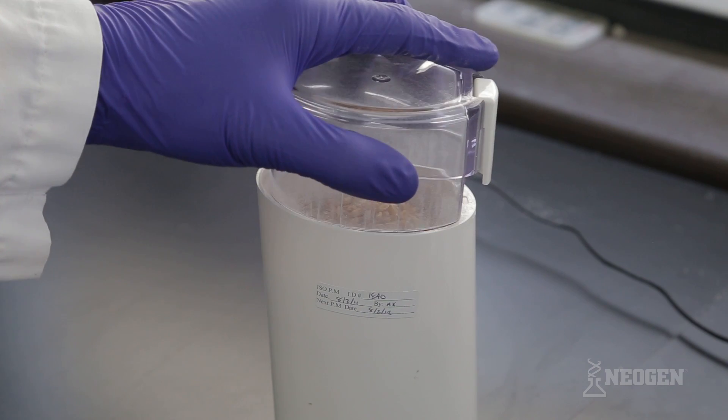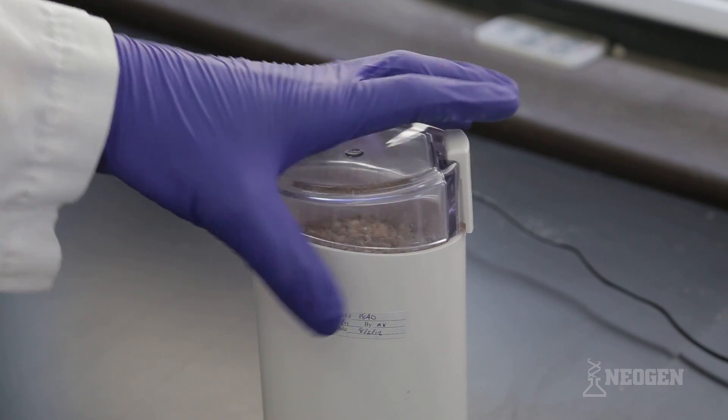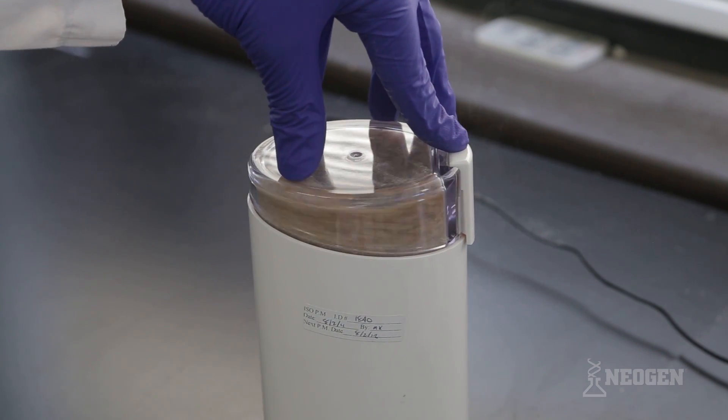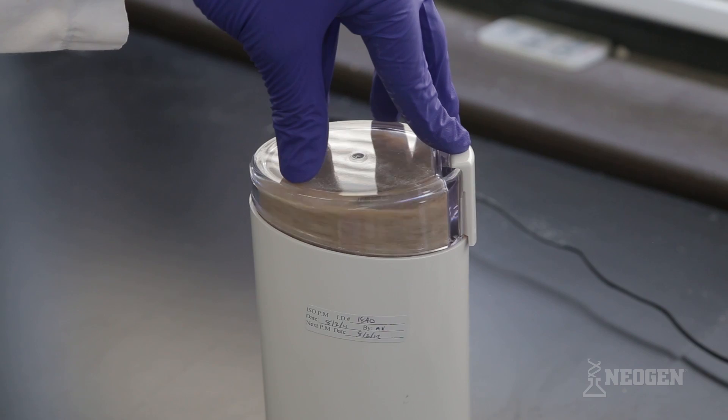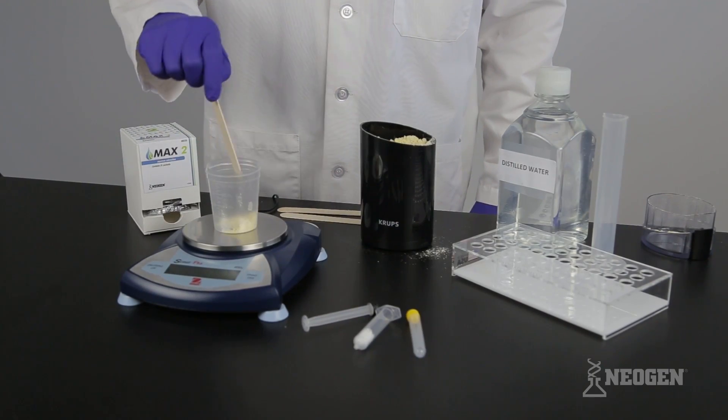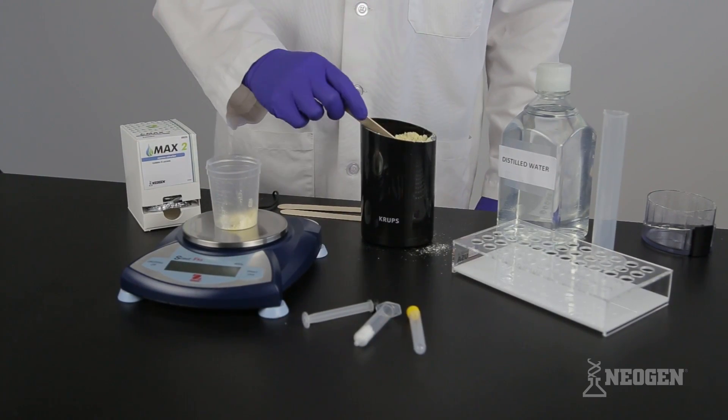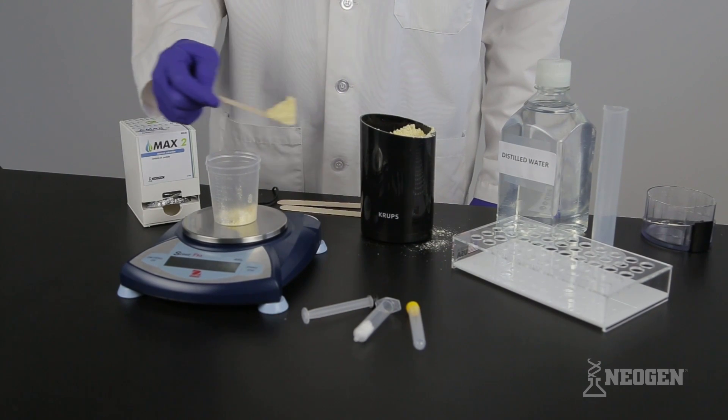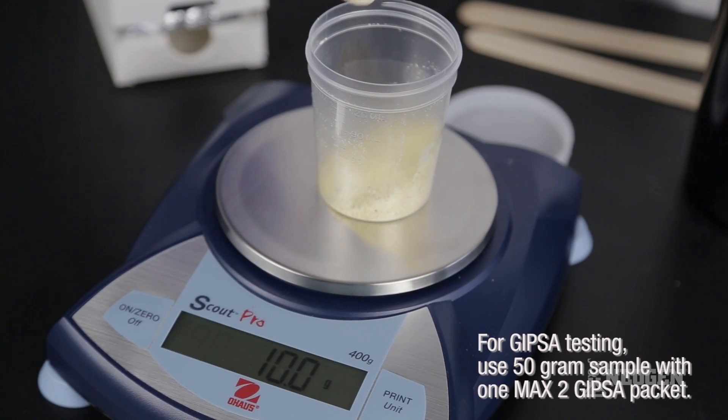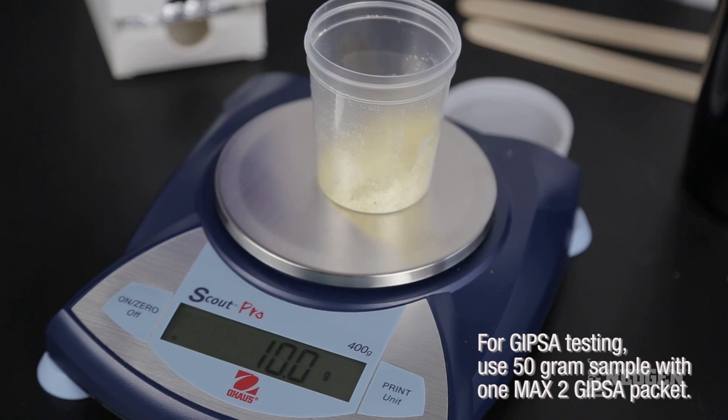Obtain a representative sample and grind so that at least 75% of the ground material passes through a 20 mesh sieve. The particle size should be about the same as instant coffee. Grind a minimum of 100 grams of your sample. Weigh out 10 grams into the sample cup, plus or minus 0.1 gram.